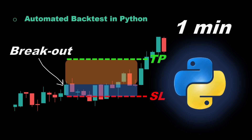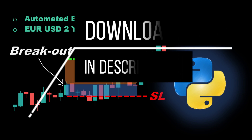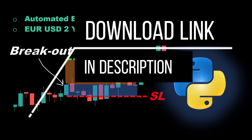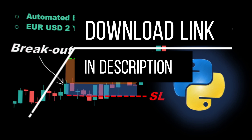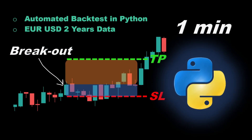We will code this strategy in Python, backtested on the EUR/USD data for around two years, and then go through the results. If you are a fan of coding and backtesting strategies, the Python code is available for free download from the link in the description. You can download it along with the data files, run the backtest from your side, and experiment by changing some of the parameters.